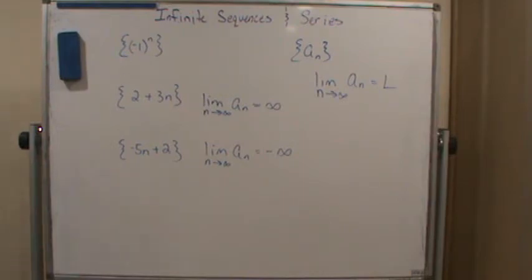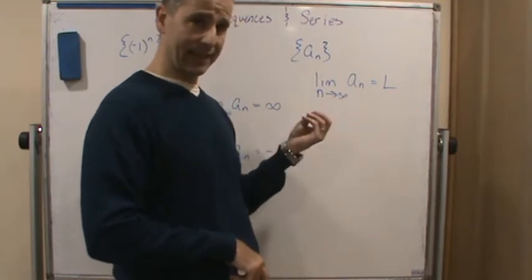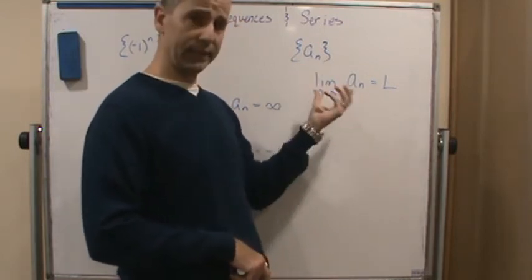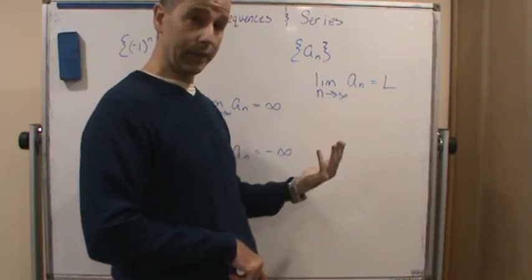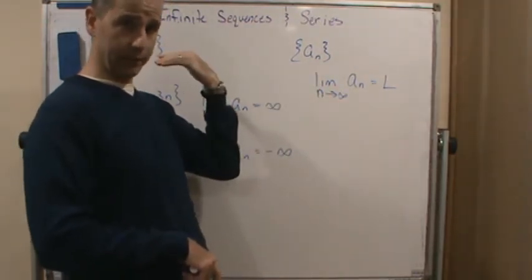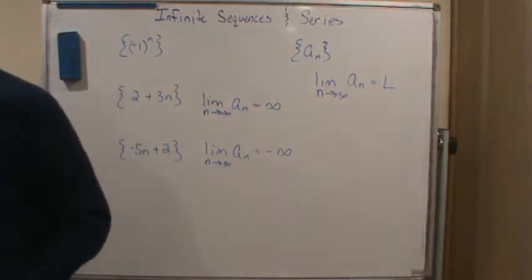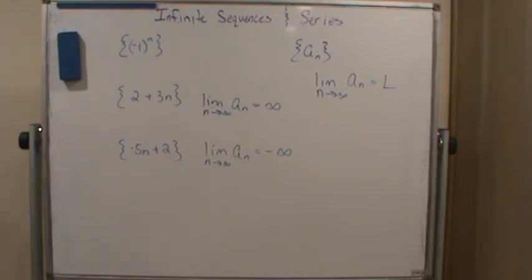The point is that the convergence or divergence of a sequence has to do with the nth term — what is happening with the nth term as n gets large. I can stick all kinds of terms to the beginning of the sequence and it's not going to change whether the sequence is divergent or convergent. It will still converge to the same limit L.